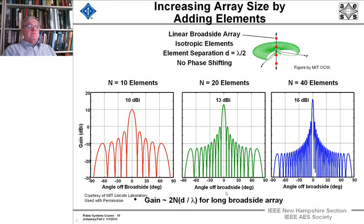And in general, for long broadside arrays, the gain is approximately twice the number of elements times d divided by lambda.